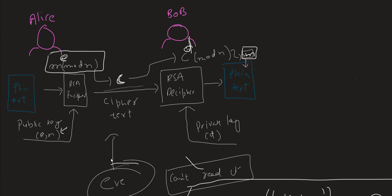This ciphertext on the channel cannot be understood by the hacker or eavesdropper. On the receiving side, when Bob receives it, he decrypts it using the private key, which is a function of d and n, and gets the plaintext back.